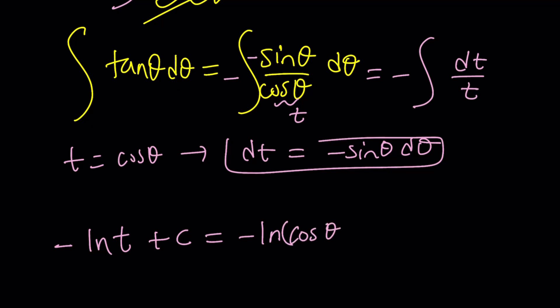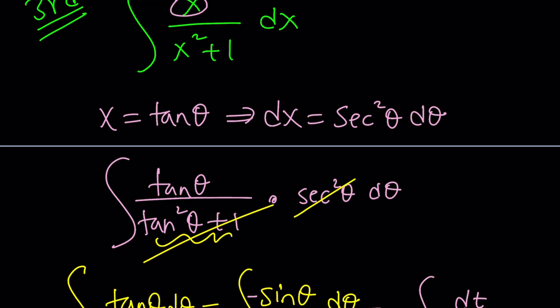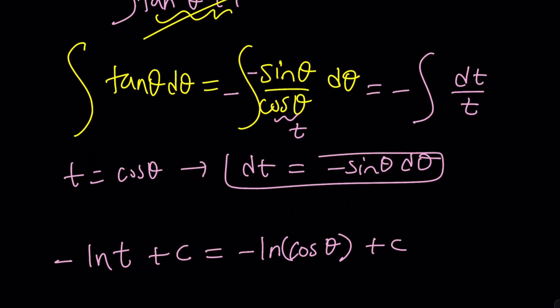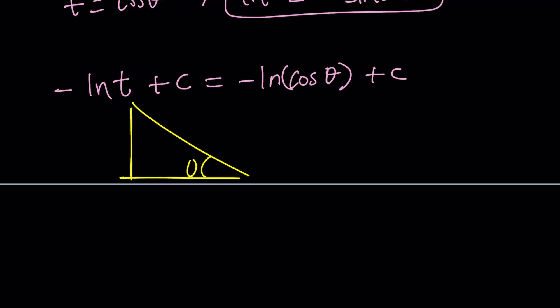Wait a minute, is that the answer? Nope. We still have to back substitute. What is theta? Well, I don't know what theta is, but I know that tangent theta is equal to x. So, let's draw a right triangle. That's a really cool way to do it. Tangent theta is equal to x. So, now from Pythagorean theorem, some people say Pythagorean, it's Pythagorean theorem. Cosine is going to be 1 over that.